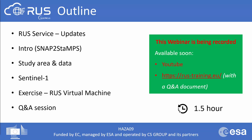Let's have a look at the outline of today's session. We will start with the introduction to RUS service and its recent updates, then move on to the introduction to SNAP to StaMPS, the study area and data used for this exercise, and finally Sentinel-1. Afterwards we will move to the RUS virtual machine for the practical session, concluded by a Q&A session lasting approximately 30 minutes. The entire webinar is being recorded and will be available on YouTube and on the RUS training portal, where you can also find a Q&A summary.